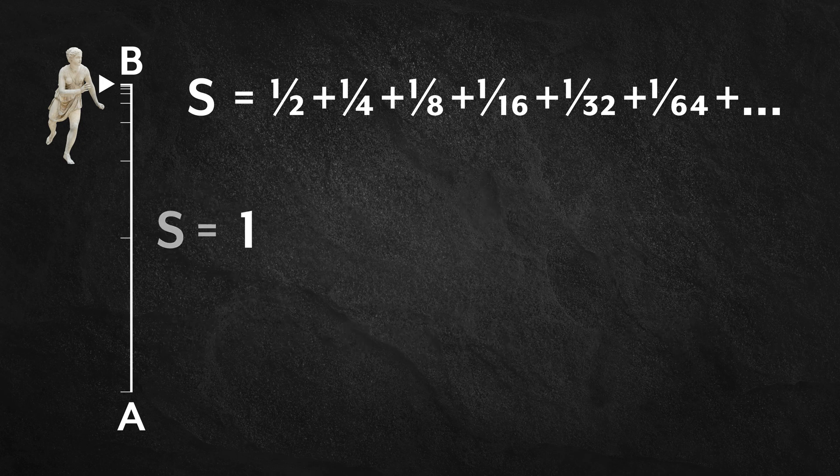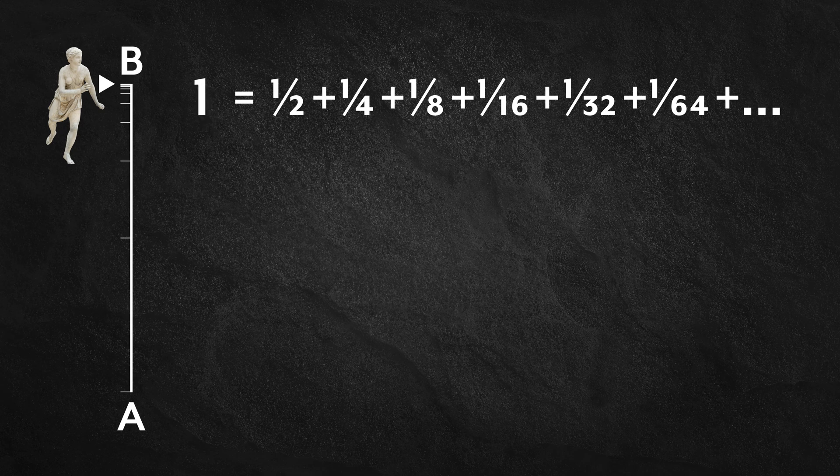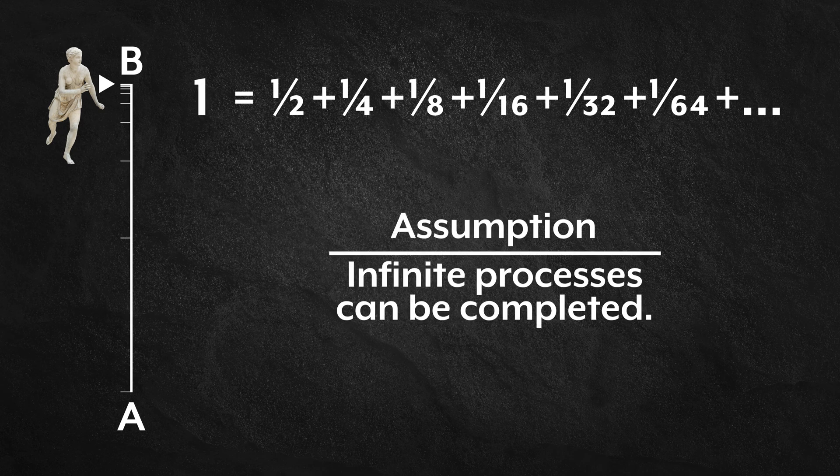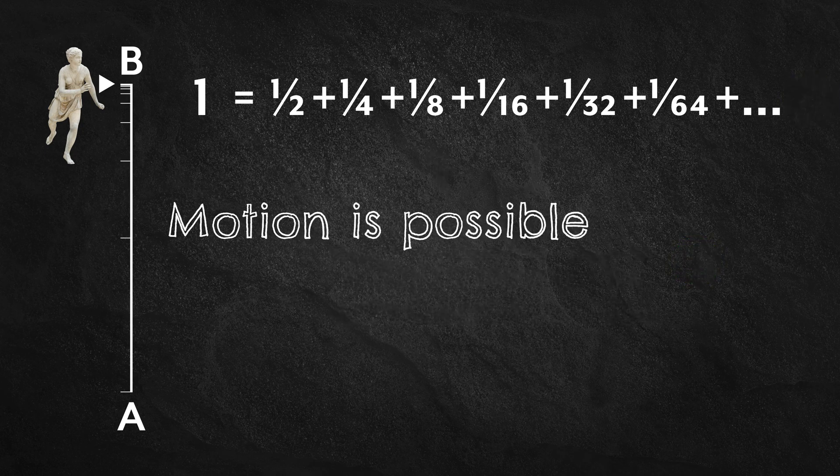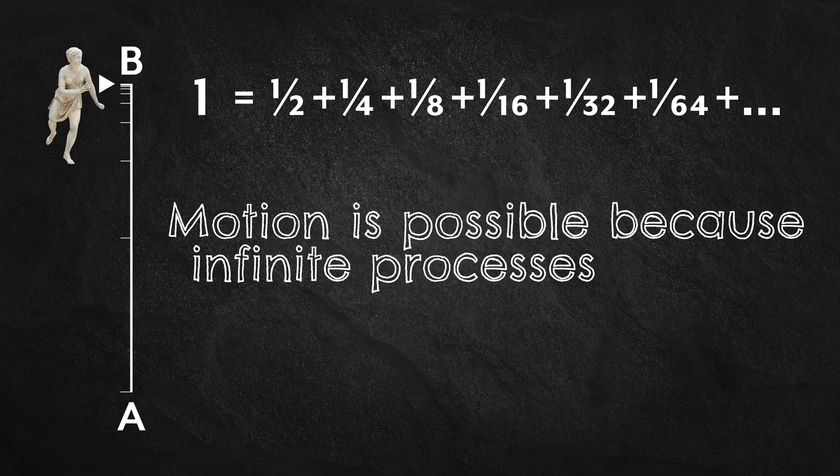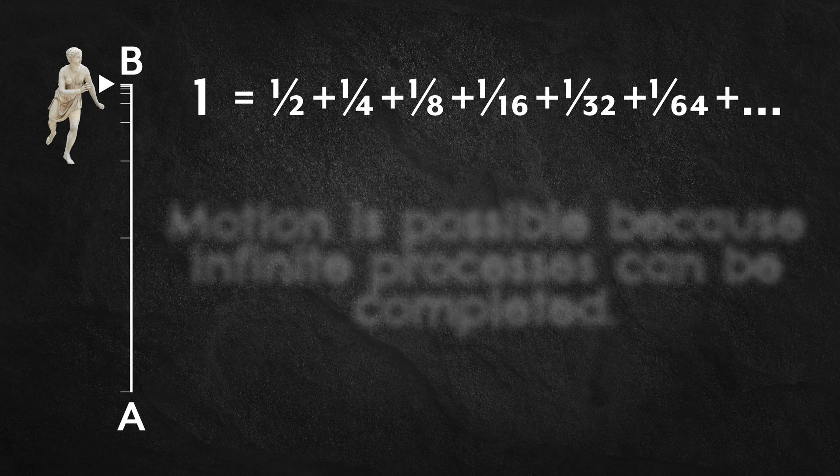That infinite series equals exactly one. So we made an assumption and ended up with something that seems reasonable. Something consistent with a huge body of work, suggesting that that assumption is valid. Therefore motion is possible, because infinite processes can be completed.